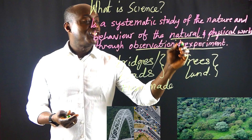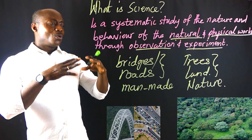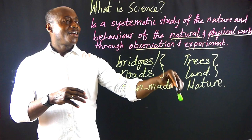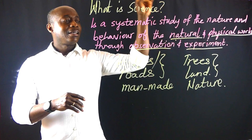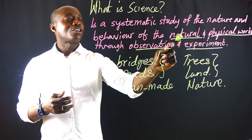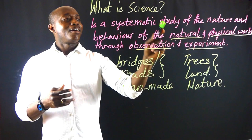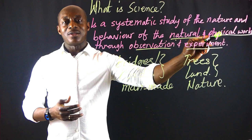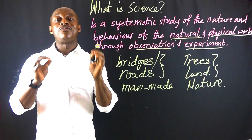So you see — these are man-made things, and these are things made by nature. All the things made by nature, such as trees, land, the atmosphere, the air, the river bodies, and so on, constitute what we call the natural world. However, the man-made together with the natural world is known as the physical world. In effect, the physical world is the universal set, and the natural world is a subset of the physical world.